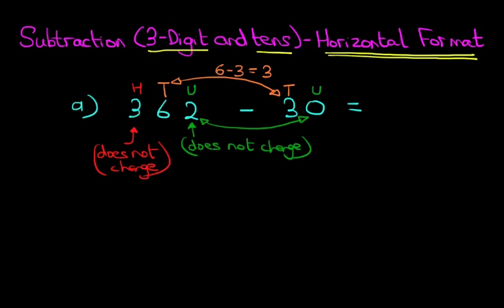So therefore, 362 minus 30 is, do this step by step. It is three hundred and thirty two. It is only the tens which have changed. They've gone from six, because it's six minus three, they've gone to three. So 362 minus 30 equals three hundred and thirty two.